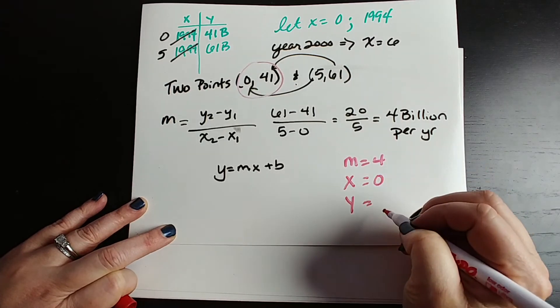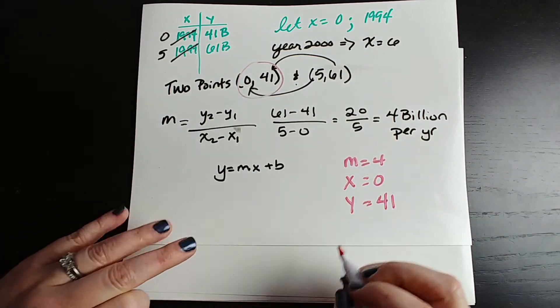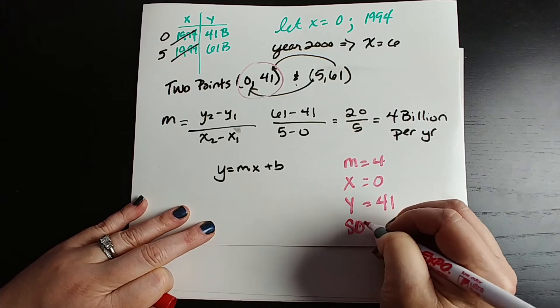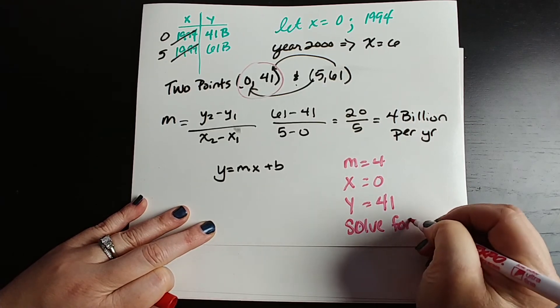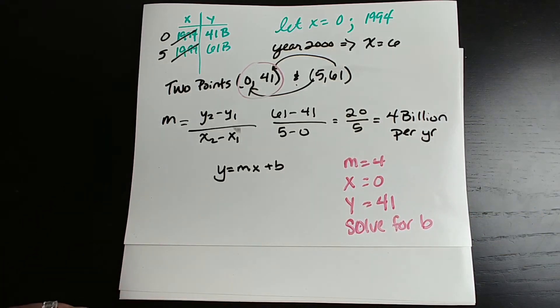x equals zero, y equals 41. We are going to plug that all in and solve for b, which is our y-intercept. All right, so let's do, let's change it to purple, shall we?